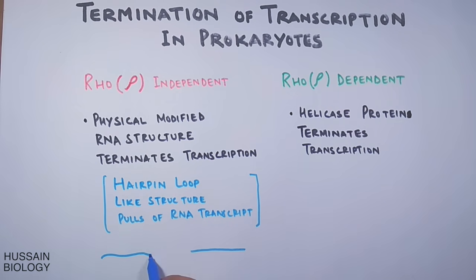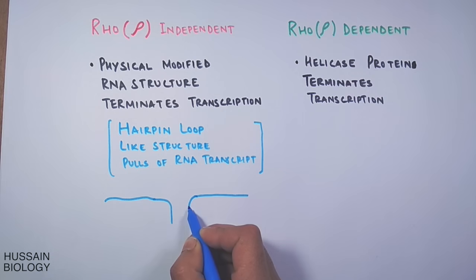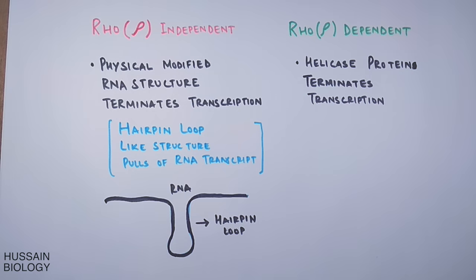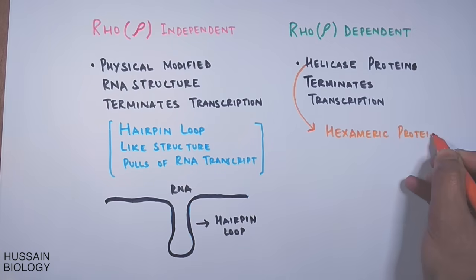Now looking at rho-dependent termination, the helicase protein, which is a hexameric protein, has a structure like this. It binds to the rut site on RNA transcript and gets to the polymerase enzyme where it terminates the transcription.